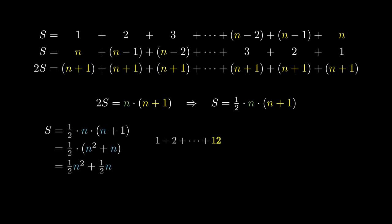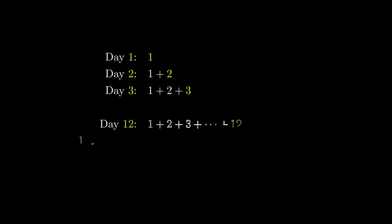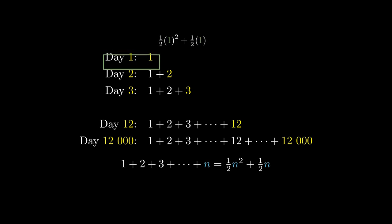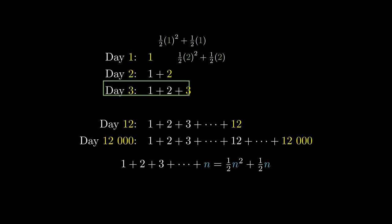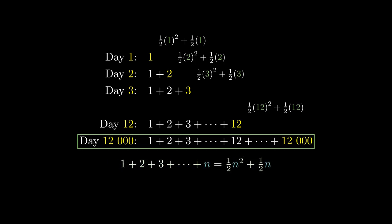In particular, on the twelfth day of Christmas, we obtain half times 12 squared plus half times 12 number of gifts. And on the 12,000th day of Christmas, we obtain half times 12,000 squared plus half times 12,000 number of gifts. Returning to the original problem, let's calculate the number of gifts that we get on each day. Using this convenient formula, the answer on day 1 is half times 1 squared plus half times 1. On the second day we get half times 2 squared plus half times 2. On the third day we get half times 3 squared plus half times 3. On the twelfth day we substitute n equals 12, and on the 12,000th day we substitute n equals 12,000.